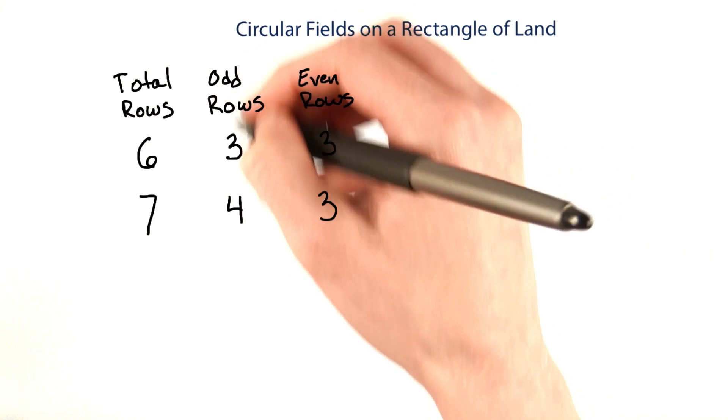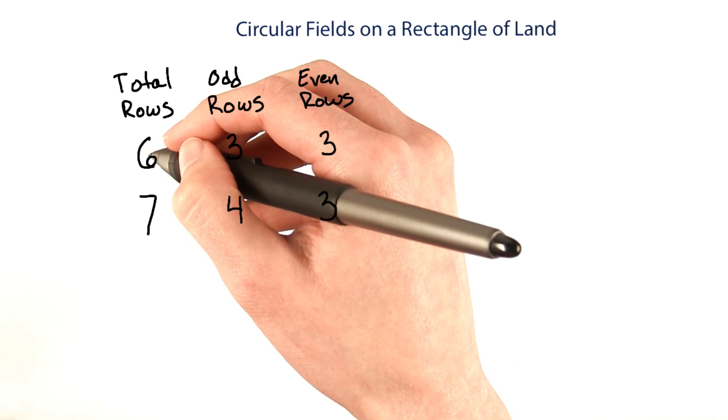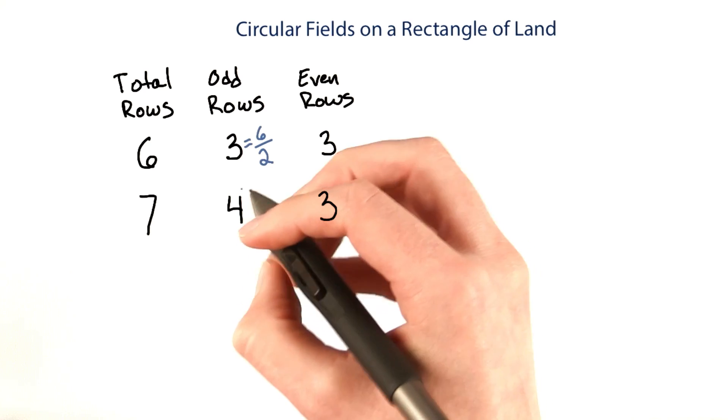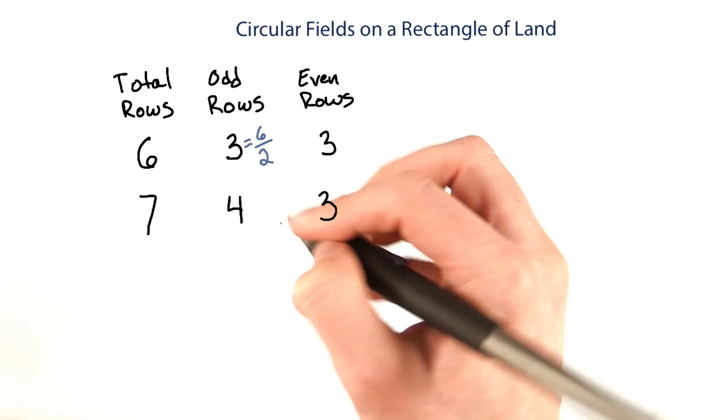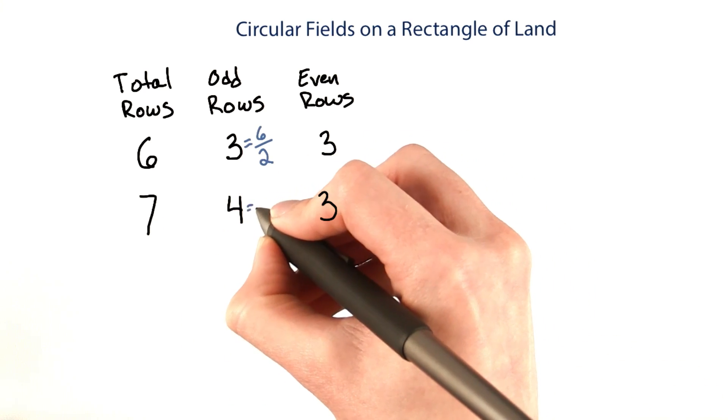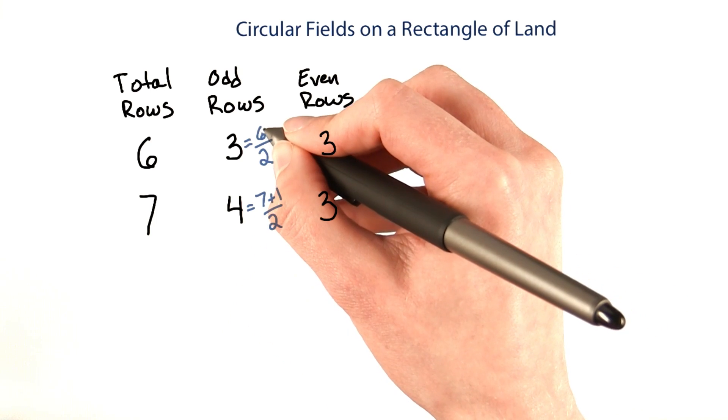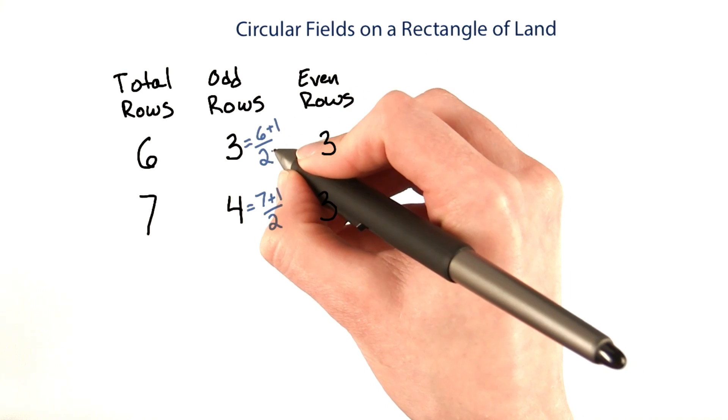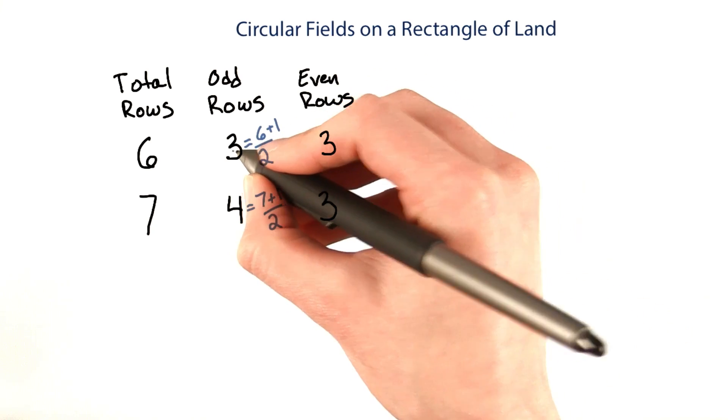So it looks like the number of odd rows is something like half of the total number of rows. But four isn't exactly half of seven over two. It would be half of seven plus one over two. What would happen if we added one onto this six as well? Then we would get seven over two, which in Java land, for integers, is still three.